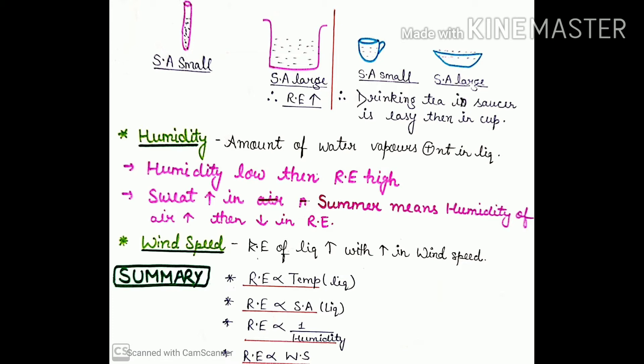When humidity is low, the rate of evaporation increases. This means in our atmosphere, water vapor is less. That means heat is getting more out of the air, so the evaporation rate will automatically increase. When evaporation rate increases, our clothes will easily dry up.